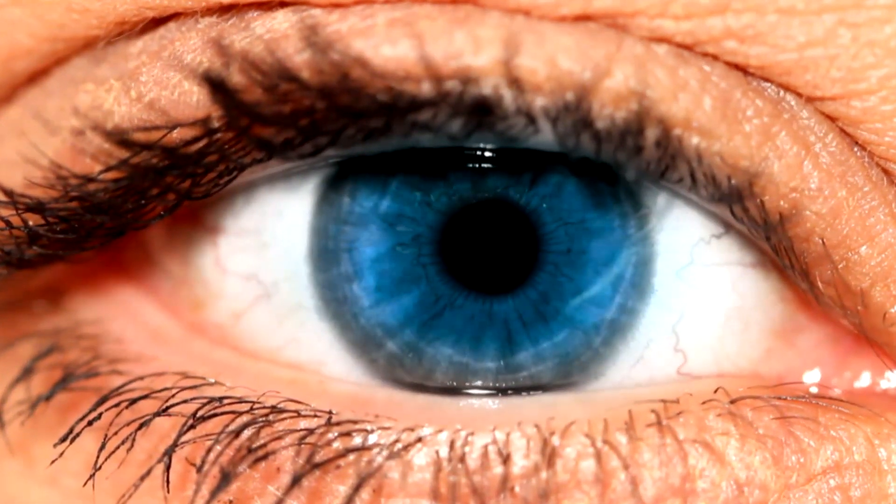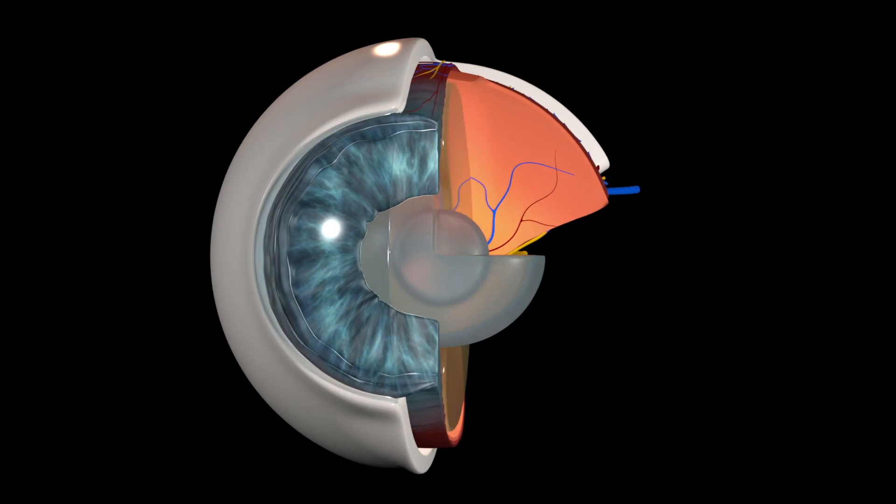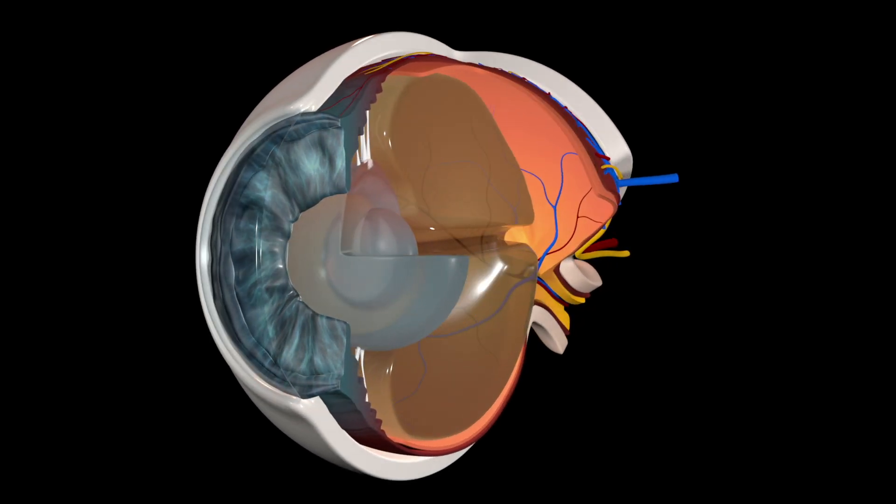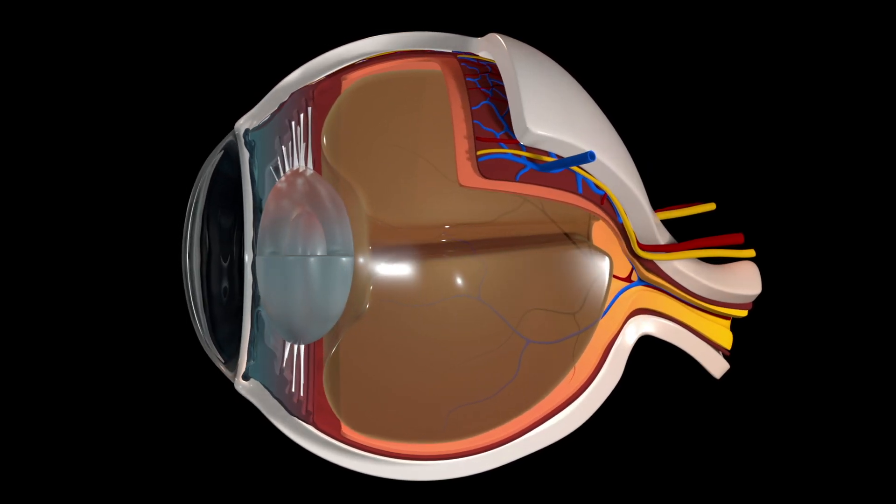The human eye is a specialized organ which has the ability to receive visual images. If we talk about the horizontal cross-section of the human eye, we see that it is composed of three layers of tissues.